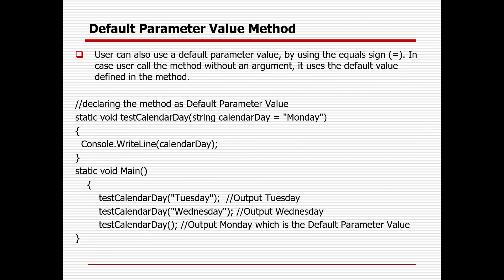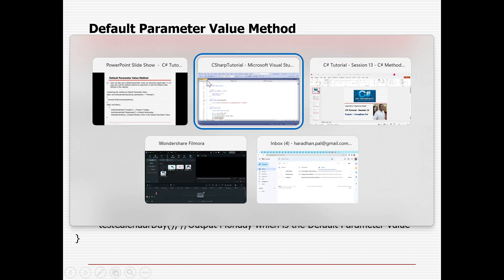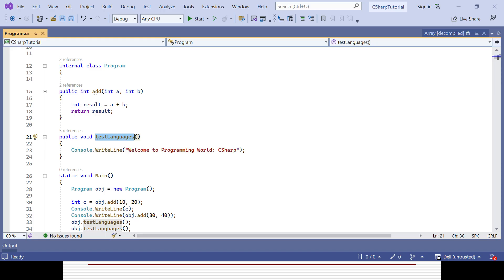Now we will see about the default parameter value method. When creating a method you can add arguments as parameters, and users can also use a default parameter value by using the equal sign. In case the user calls the method without any argument, it will take the default value defined in the method. If you are giving some values, that will be the first priority, but if you are not giving anything, it will take the default parameter value from the method.